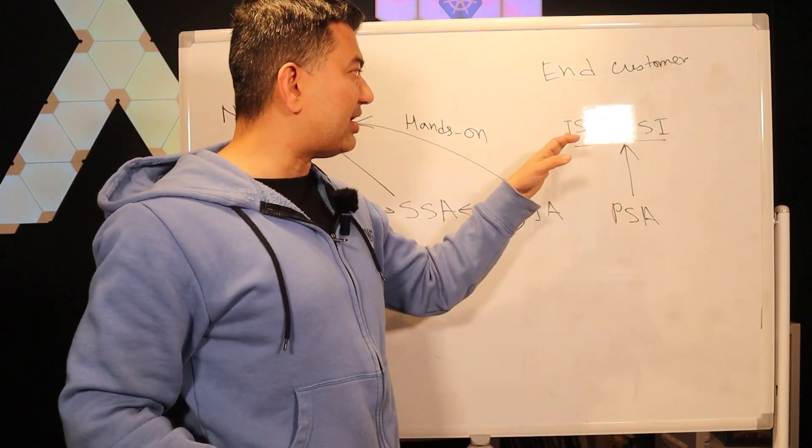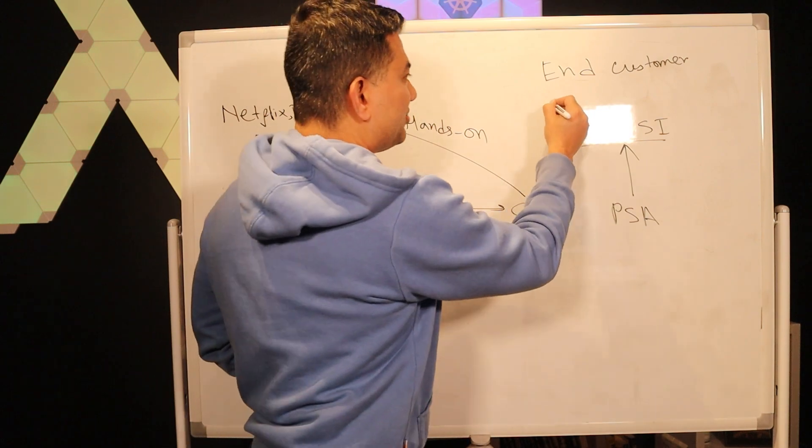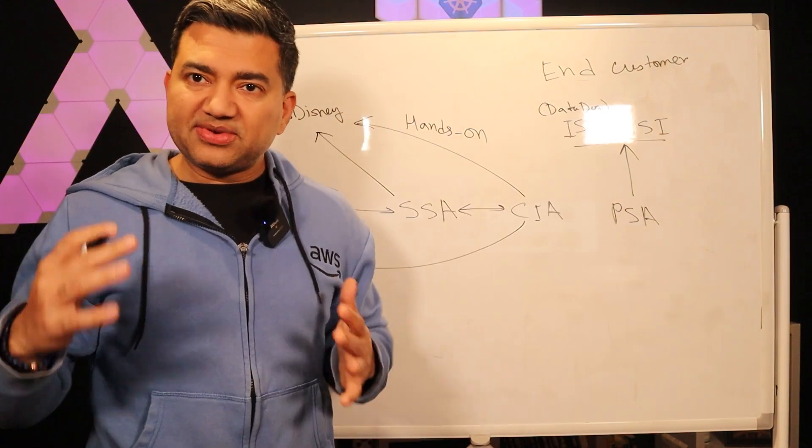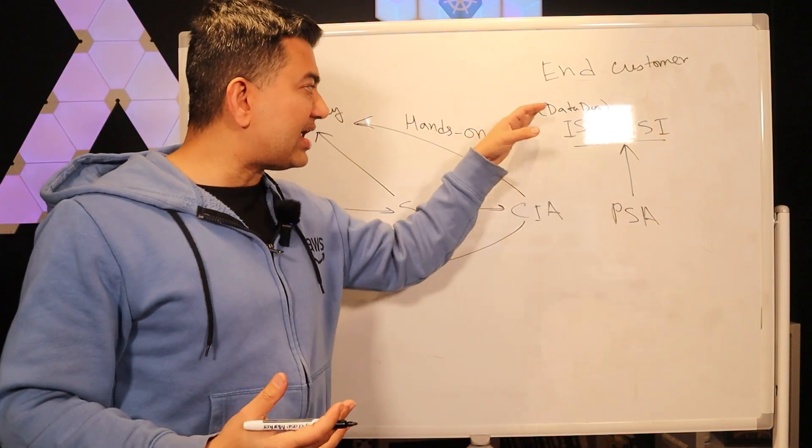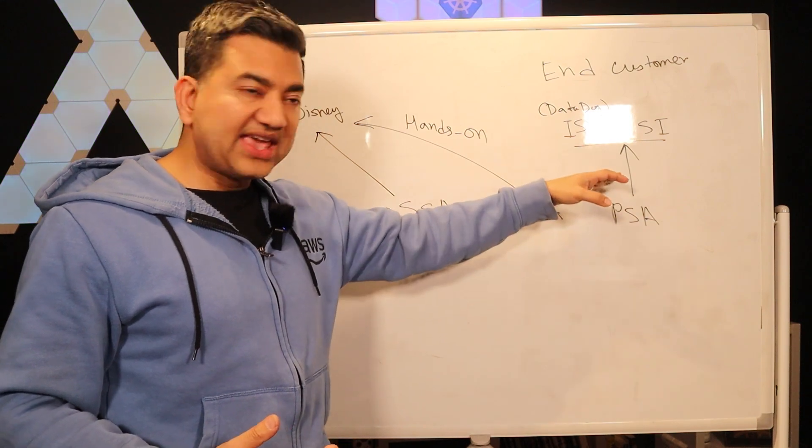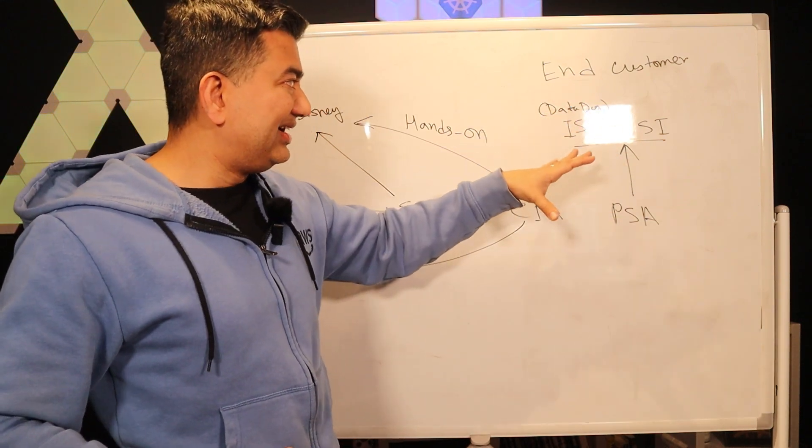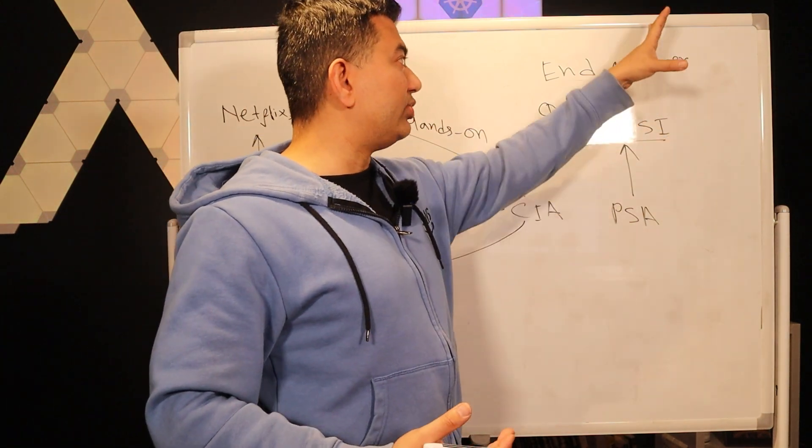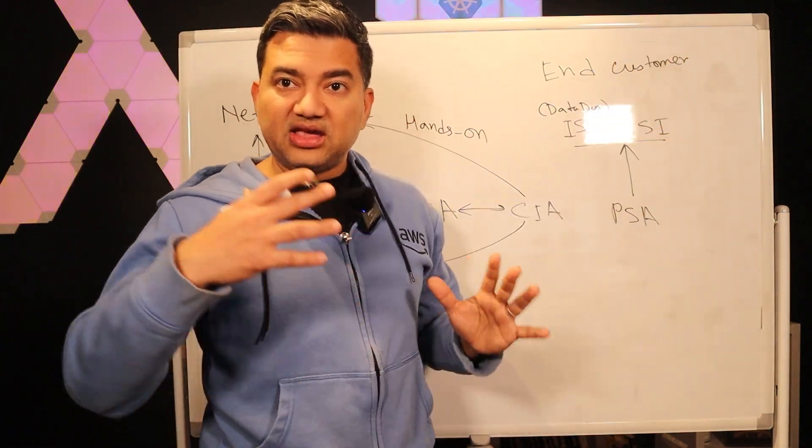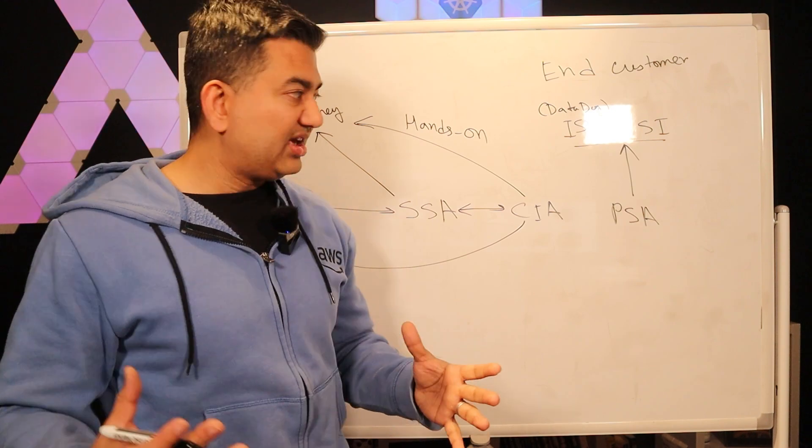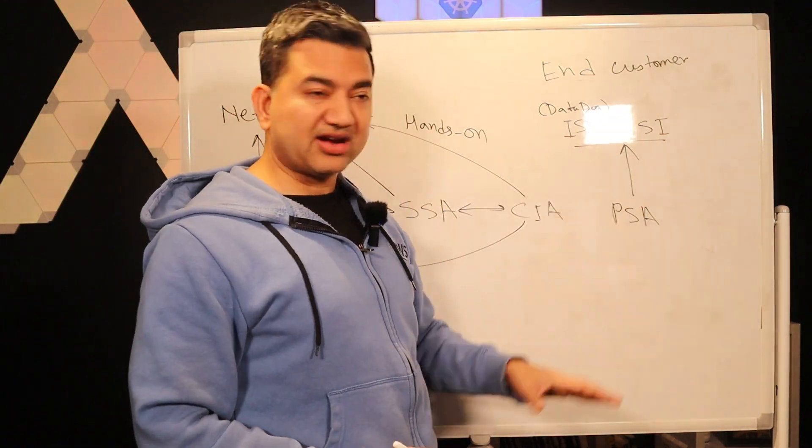So let's say for ISV, let's take an example, Datadog. Whatever services that Datadog runs on, Partner SA will give solutions on those. Or System Integrator will talk to end customer and then they need help with solutioning and they will engage the Partner SA.